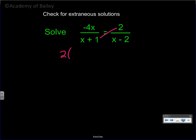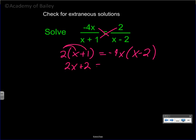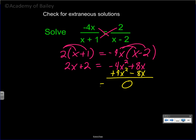We're going to say we have 2 times (x + 1) and negative 4x times (x − 2). Distribute: 2x, positive 2. Distribute: negative 4x squared and positive 8x — negative 4 times negative 2 is positive 8x. Now let's get everything to one side. I want to add 4x squared and subtract 8x from this side, leaving us with 0.